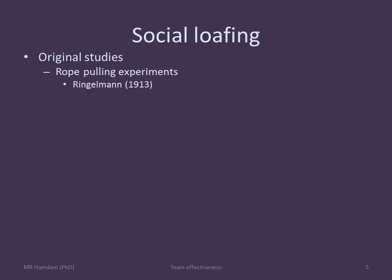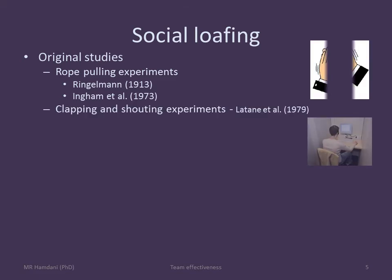We have experiments as early as 1913 showing that in group settings people don't work as hard as when they are working alone. For instance, there are classical clapping and shouting experiments where subjects are assigned the task of either clapping or shouting. The subjects are brought to the lab and asked to sit in a cubicle all alone. In one group, subjects are told that although they don't see anybody else, there are other subjects in the lab sitting in cubicles just like them, and as a group they are instructed to shout or clap as loud as possible — but in reality they are just working alone.